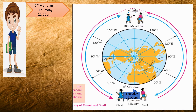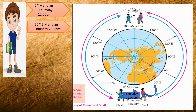Sunil is going ahead, not behind. At 30 degree east meridian, from 0 to 30 degrees there are 30 longitudes, which equals 2 hours. Counting from 12: 1, 2 — so at 30 degree east meridian, Sunil will have Thursday 2 pm in the afternoon. Now Sunil is travelling towards 60 degree east meridian. From 30 to 60 degrees east is another 2 hours difference, so at 60 degree east it will be Thursday 4 pm.